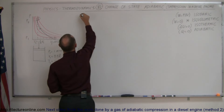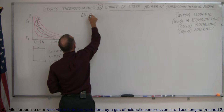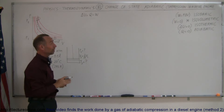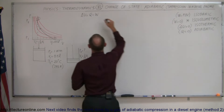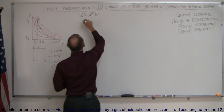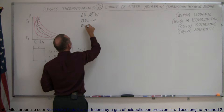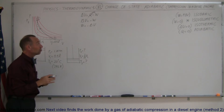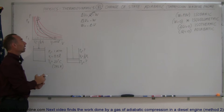For an adiabatic process, we use the first law of thermodynamics: the change in internal energy equals Q minus W. For adiabatic processes, Q equals 0, so that term goes to zero, giving us delta U equals negative W, or W equals negative delta U. In an adiabatic process, all the energy to do the work comes from the internal energy of the gas.